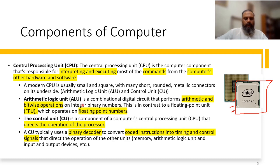There is another unit similar to the ALU called the FPU, which operates on floating point numbers. The control unit directs the operations of the processor — it is basically a binary decoder that converts code instructions into timing and control signals, which direct the operation of other units like memory, arithmetic logic unit, and input/output devices.